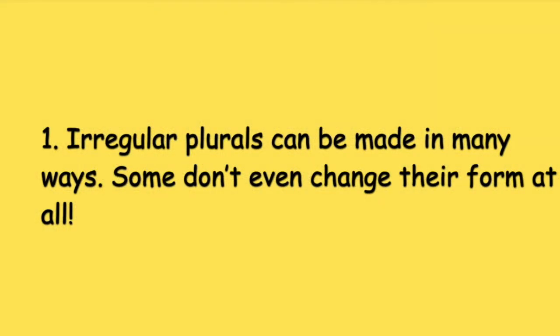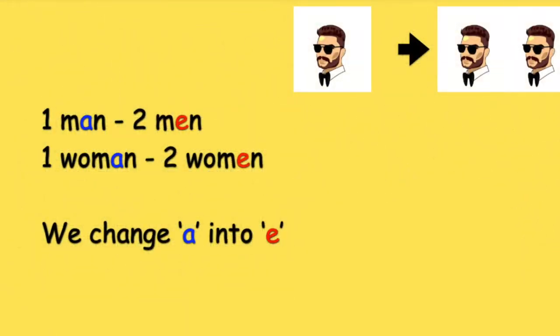Irregular plurals can be made in many ways. Some don't even change the form at all. One man, two men; one woman, two women. We change A into E.